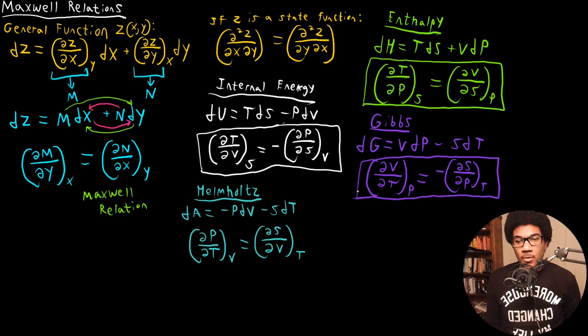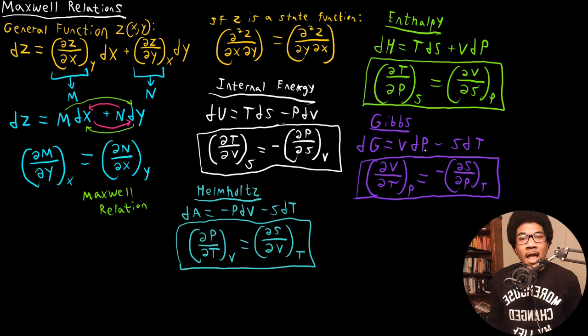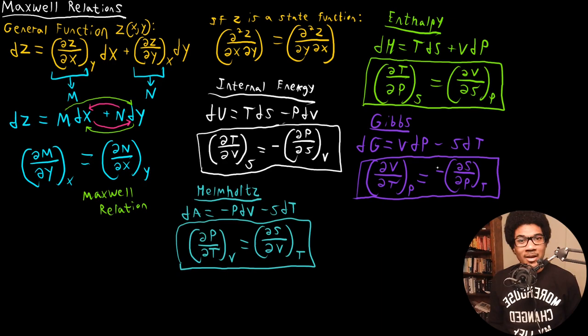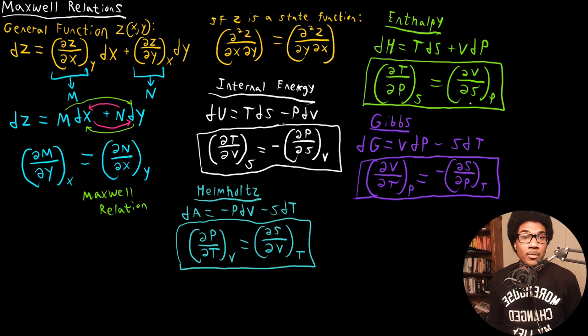So this gives you your four Maxwell relations derived from each thermodynamic potential. These may look unspectacular right now, but having these relationships between state variables can be very handy for relating different properties. For example, if you want to solve for the entropy change in some gas expansion but don't have a function for the entropy — but do have a function for the volume of that gas — it's useful to relate entropy change to volume change, as in the partial derivative relationship derived from the Gibbs free energy. You can see the utility of being able to relate these variables this way.